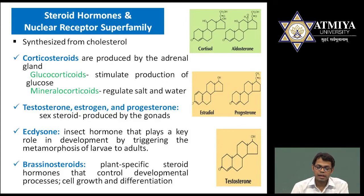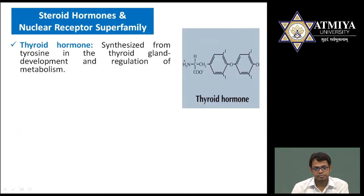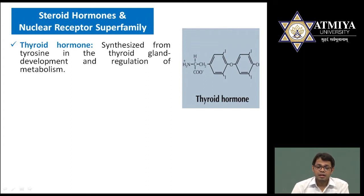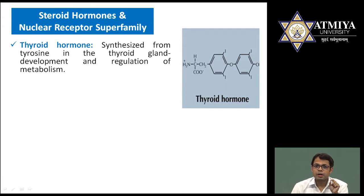The fourth steroid is brassinosteroids, a plant-specific steroid hormone responsible for the control of development, cell growth, and differentiation. Next is thyroid hormone — though it is an amine, it is categorized as steroid-like in nature, able to enter the cell with receptors present in the nucleus. Thyroid hormone is responsible for BMR (basic metabolic rate) and regulation of metabolism.